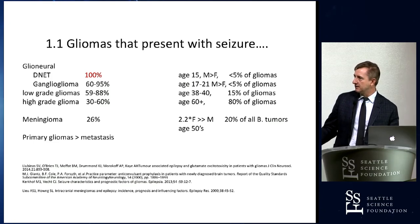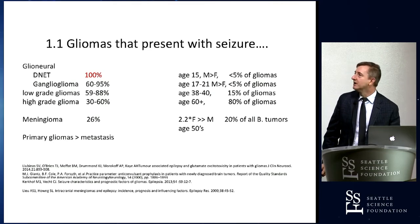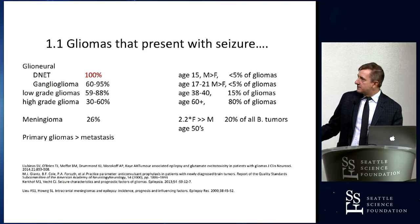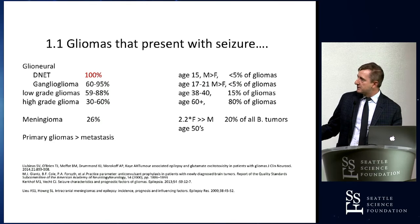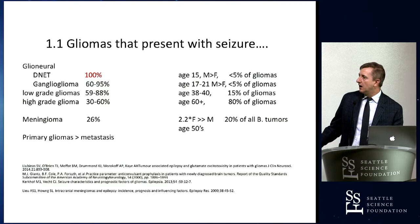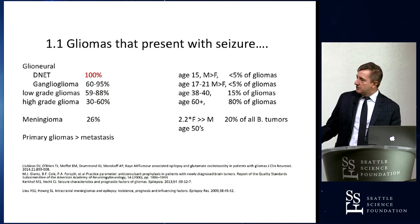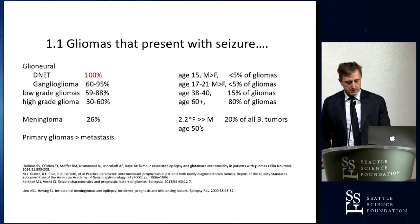The only tumor type with a very high seizure risk is the DNET — dysembryoplastic neuroepithelial tumor — which is extremely likely to trigger seizures. Age of onset tends to be young, males more than females, along with gangliogliomas. Extradural tumors including meningiomas present twice as often in females, more often in the 50s. Seizure types present more with primary glial tumors than metastatic tumors.